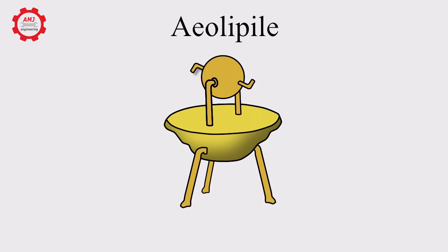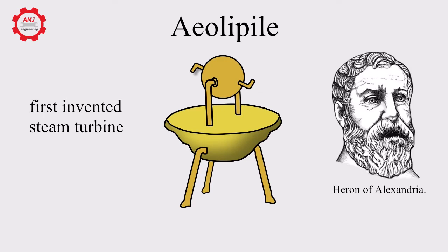The Aeolipile is the first steam turbine, invented in the first century AD by Heron of Alexandria.